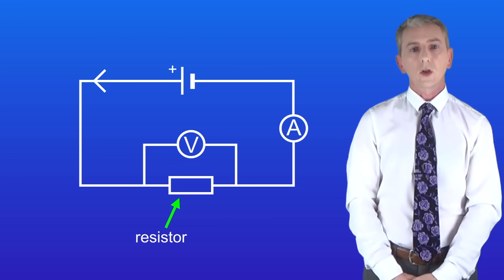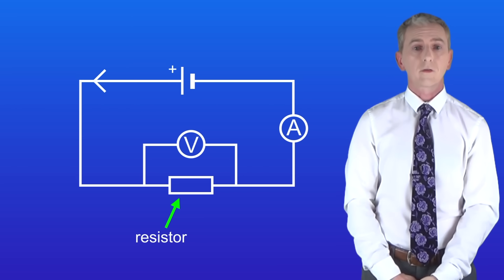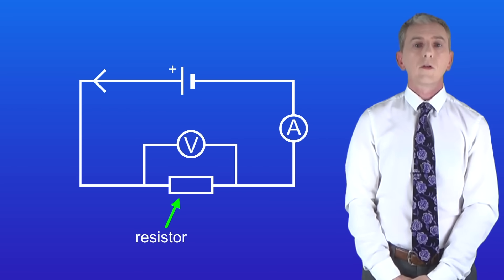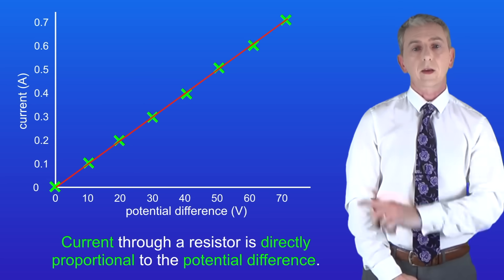We saw that we can use this circuit to change the potential difference across a resistor and then measure the current flowing through it. Remember that if we change the potential difference across a resistor and measure the current then we get a graph like this.